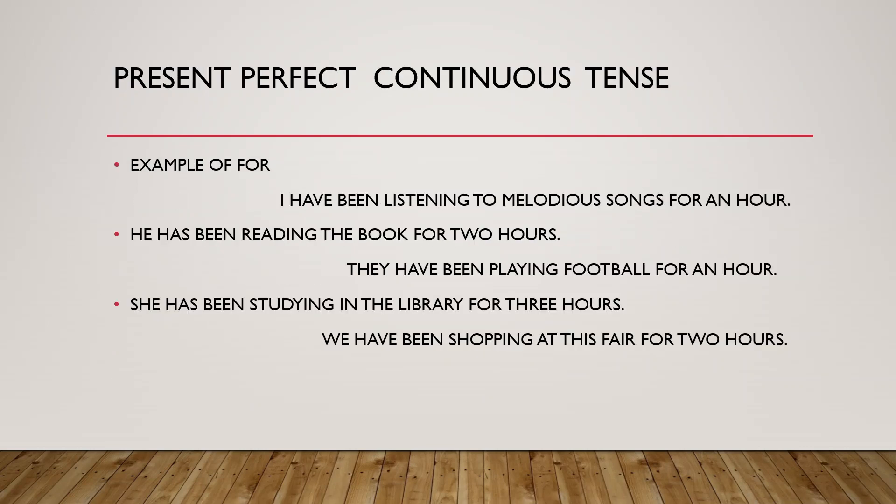Let's take some examples of for in present perfect continuous tense. For example: I have been listening to melodious songs for an hour. She has been reading this book for two hours. They have been playing football for an hour. He has been studying in the library for three hours.